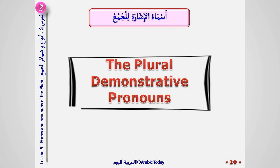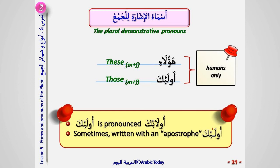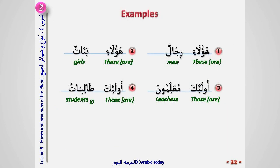أسماء الإشارة للجمع — the plural demonstrative pronouns. These are: هؤلاء (these) and أولئك (those). They are used for humans only, because non-humans use the singular pronouns. Note that أولئك is pronounced with stress on the alif mamdooda after the letter lam, sometimes written with an apostrophe. Examples: هؤلاء رجال, هؤلاء بنات, أولئك معلمون, أولئك طالبات.